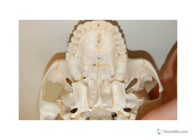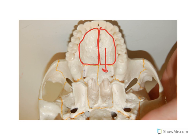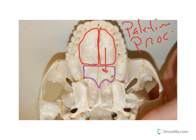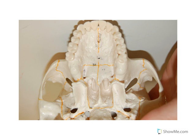On the maxillary bone we can see a structure here referred to as the palatine process of the maxillary bone. The palatine processes are here because they process towards the palatine bone. In red is the palatine process, and that's of the maxillary bone.